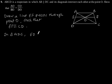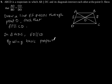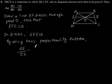Now let us consider triangle ADC. In triangle ADC, EO is parallel to CD, so by using the Basic Proportionality Theorem, we get AE by ED is equal to AO by OC. Let us say this is equation 1.